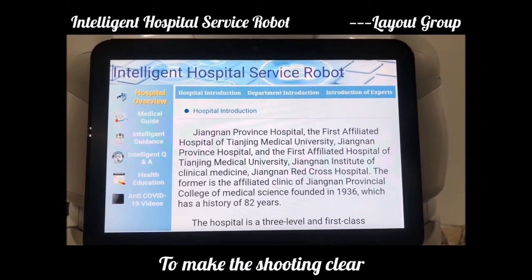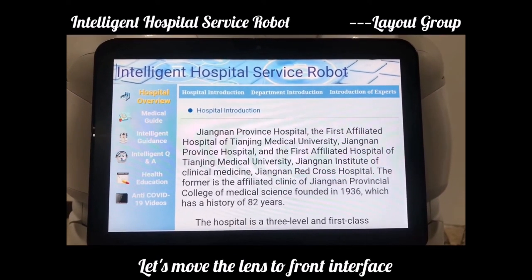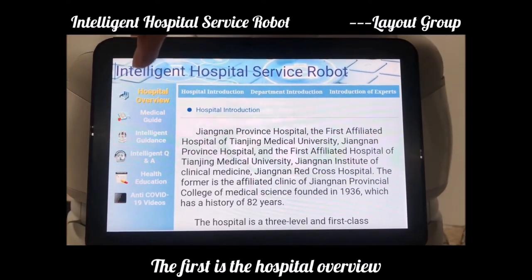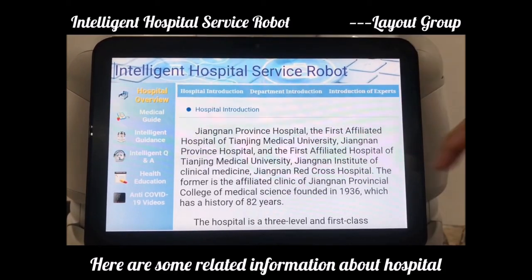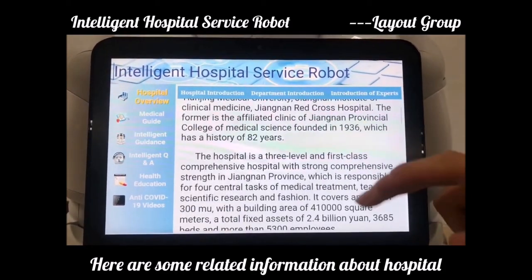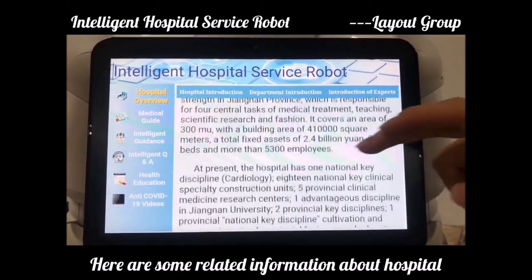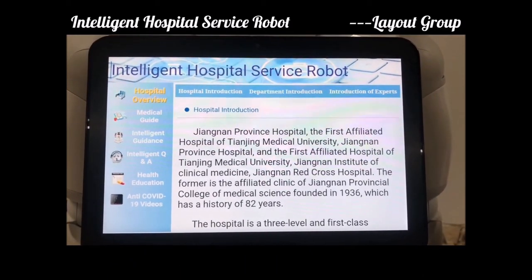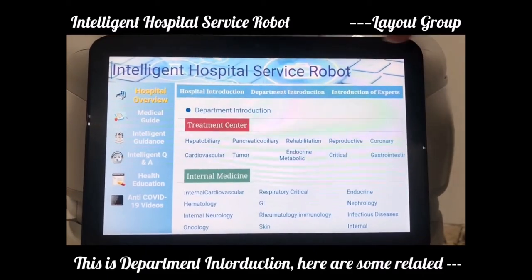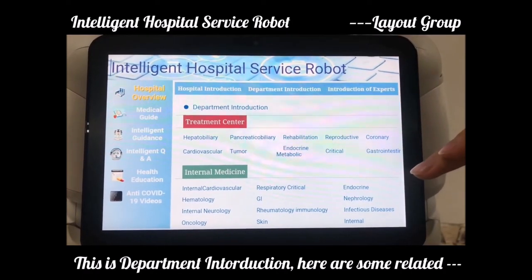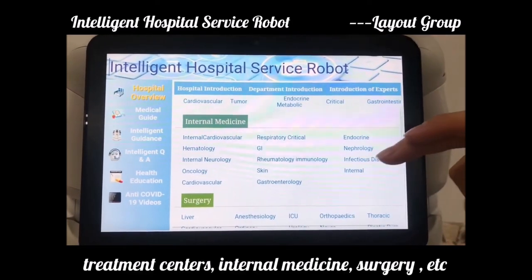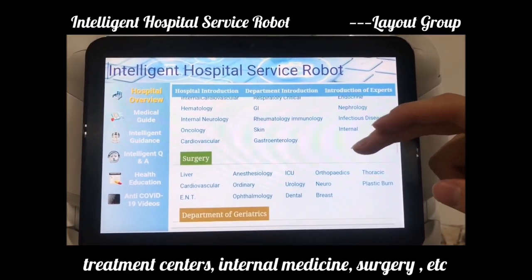To make the shooting clear, let us move the lens to the FLAM interface. The first is hospital overview. There is some related information about the hospital. The first detail is the department introduction — some related treatment centers: internal medicine, surgery, and etc.